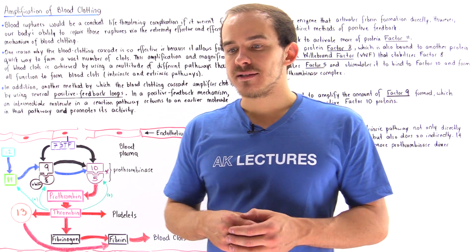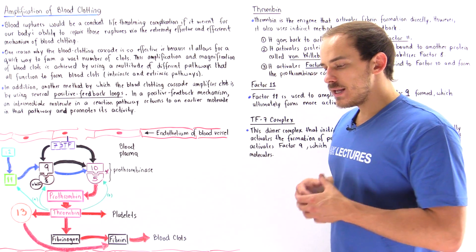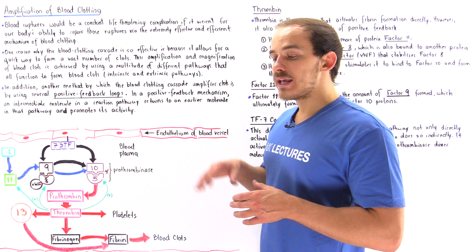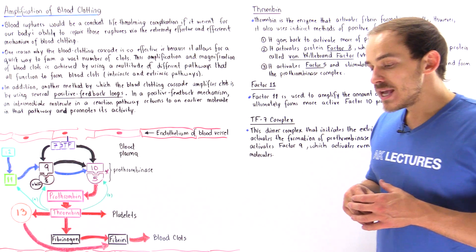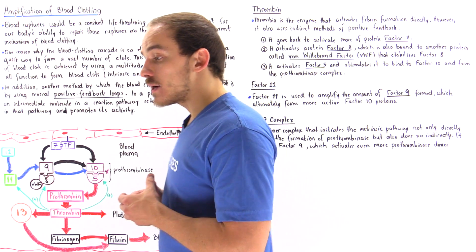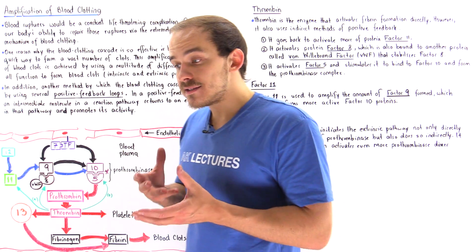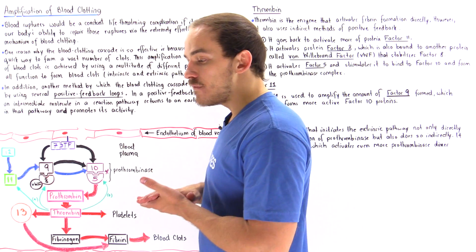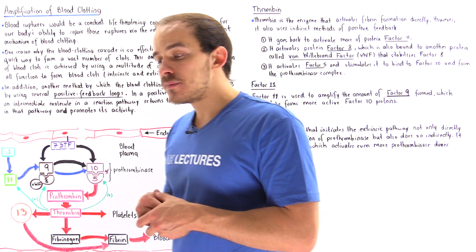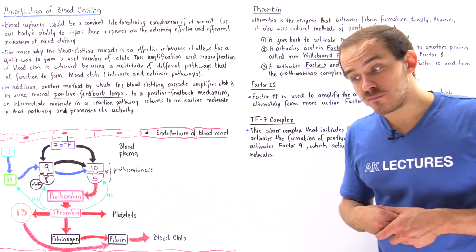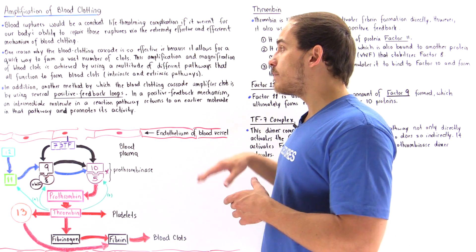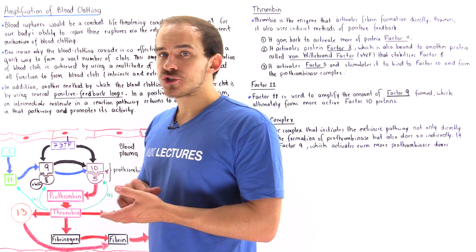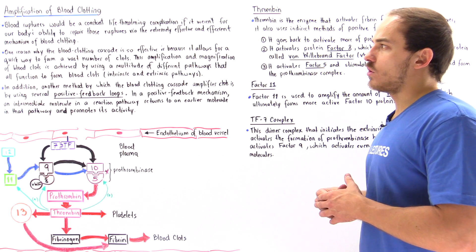Whenever a rupture takes place in a blood vessel of our body, it creates a leaking of blood. Some of that blood begins to leak out of the blood vessel and into the tissue of our capillaries. If this condition is not repaired, if the blood vessel is not sealed off in some way or form, too much blood can leak out, leading to the opening of our capillaries and the pooling of blood in those capillaries, which eventually causes the individual to go into shock. That decreases blood pressure and the individual can ultimately die.